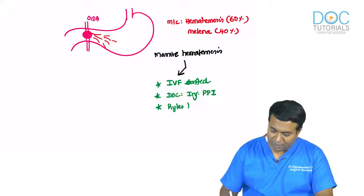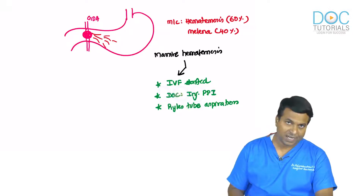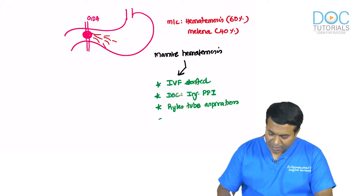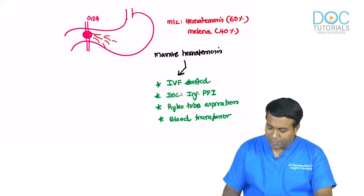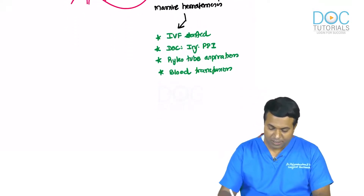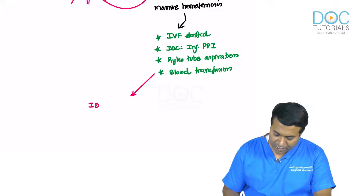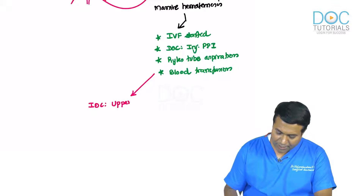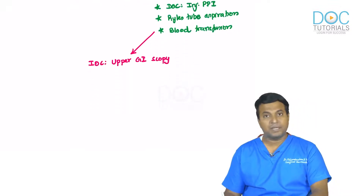Insert a Ryle's tube so the patient does not aspirate blood and to decompress the stomach. Start blood transfusion. Then refer the patient to a medical gastroenterologist for the investigation of choice: upper GI endoscopy.